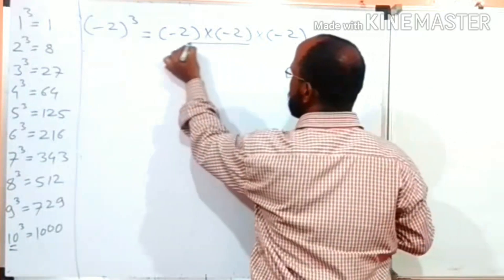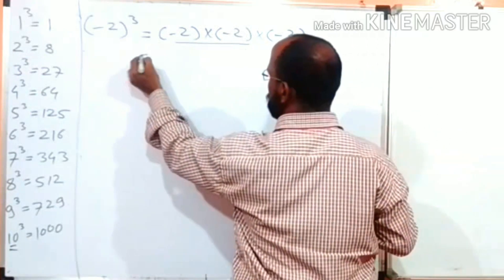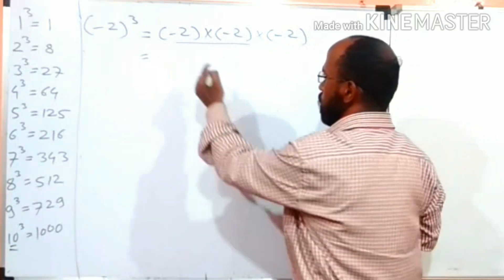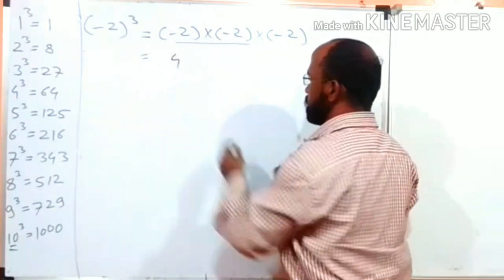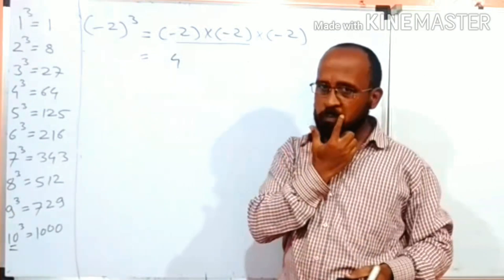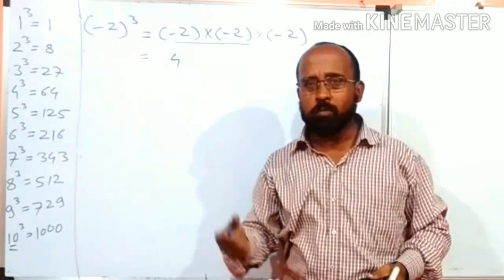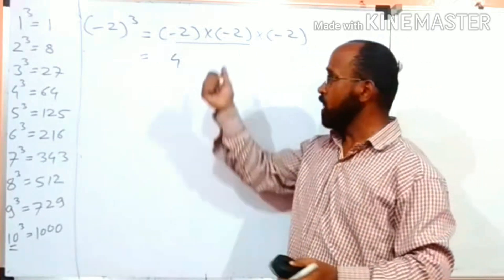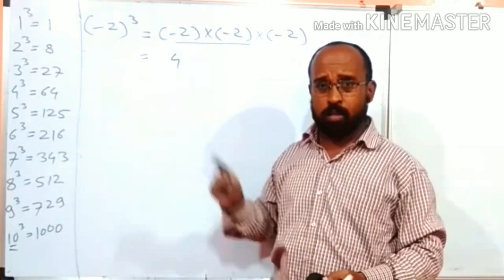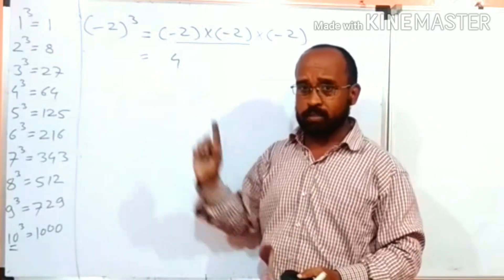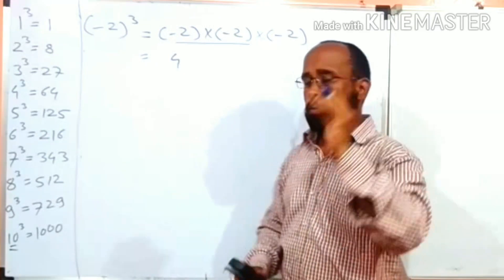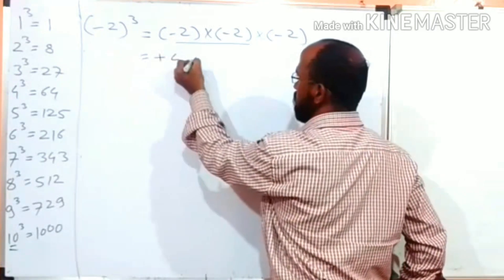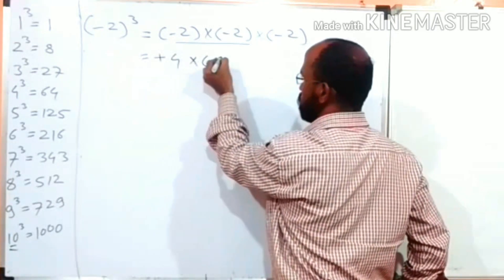Now, that is equal to minus 2 multiplied by minus 2 first. 2 twos are 4. Minus times minus is plus while multiplying. The symbol of both numbers is the same, so the symbol of the answer is always positive. So the answer is equal to plus 4 multiplied by minus 2.